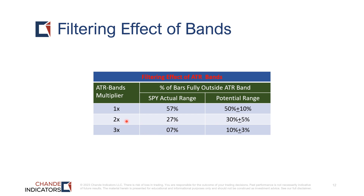With a 2x filter this drops to about 30 percent plus or minus five percent, and with the 3x filter it drops to about 10 percent plus or minus three percent. So filtering is a powerful force that you can use to focus your trading strategies.